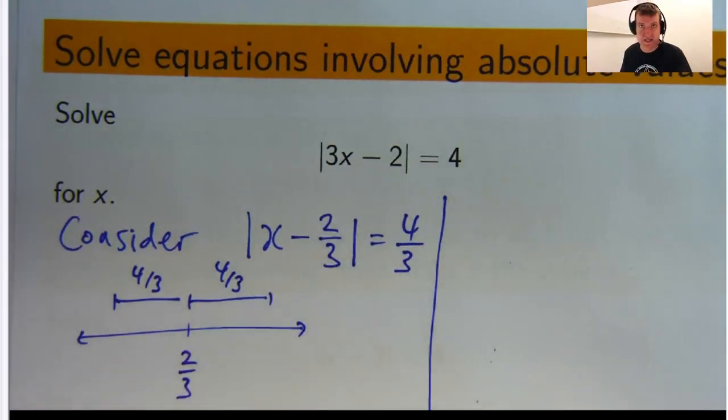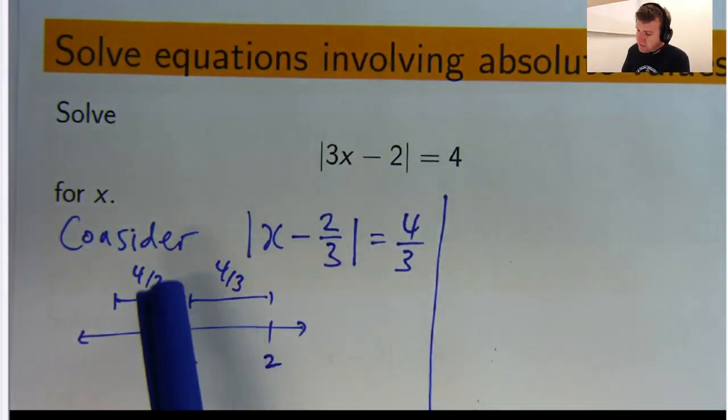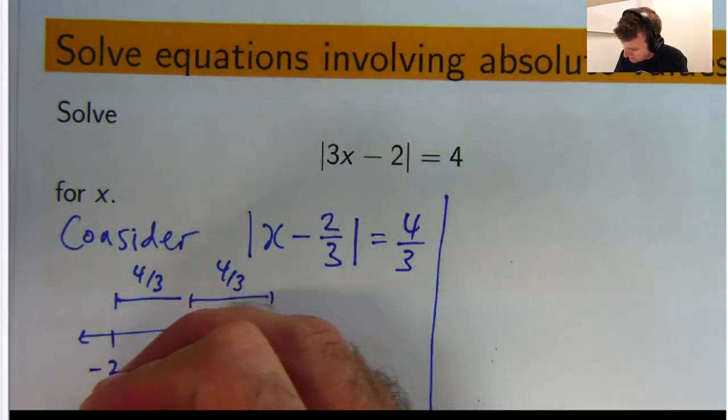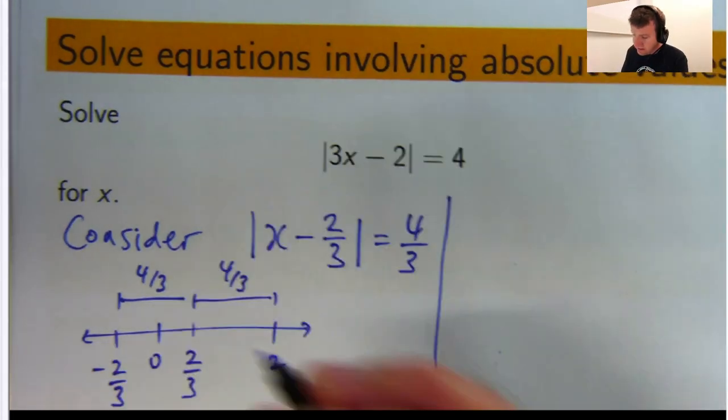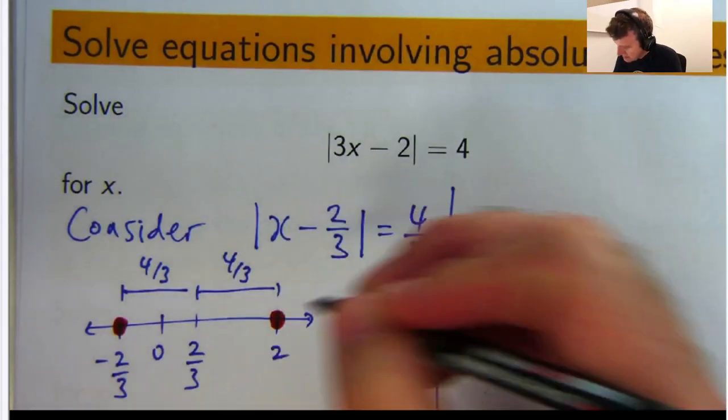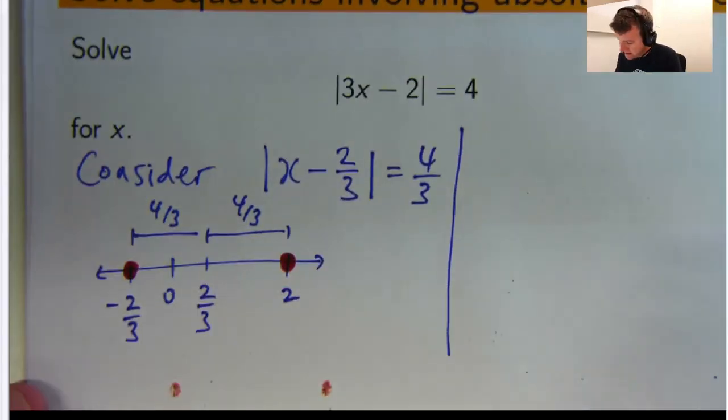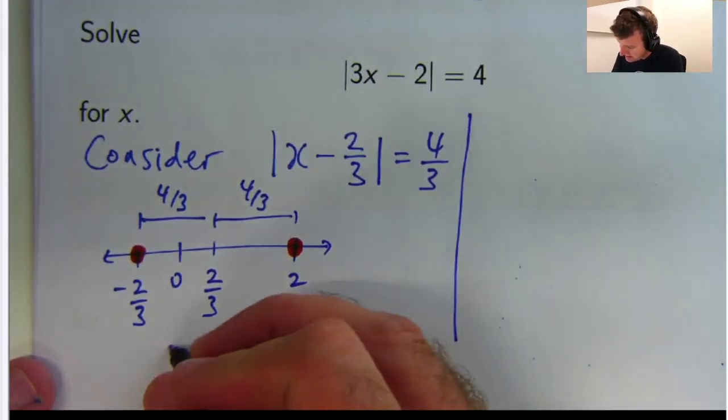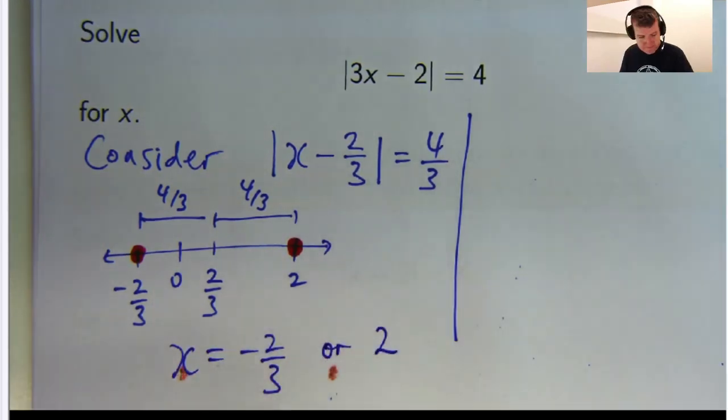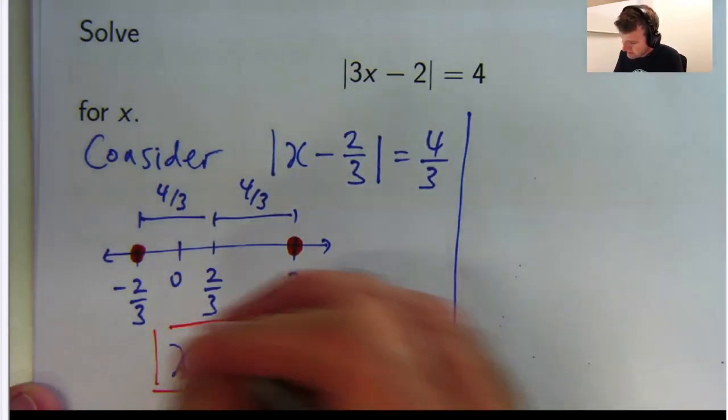So where am I going to go? 2 thirds plus 4 thirds, that's 6 thirds. So I'll end up at 2. 2 thirds minus 4 thirds, that's going to be negative 2 thirds. And 0 would be in there somewhere. So just from this diagram, I can see I want that point and that point. So the solution is x equals negative 2 thirds or 2.